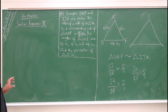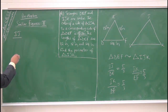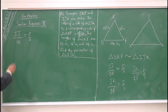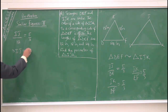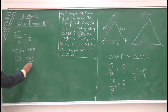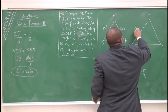Finding IJ: IJ/DE = 5/3, so IJ/12 = 5/3. Cross multiply: 3·IJ = 12 × 5 = 60, so IJ = 60/3 = 20 inches.